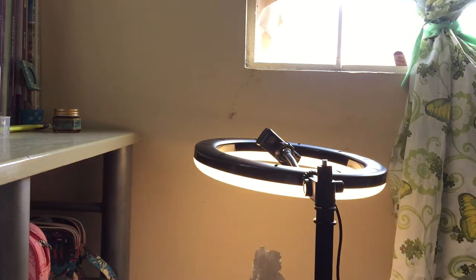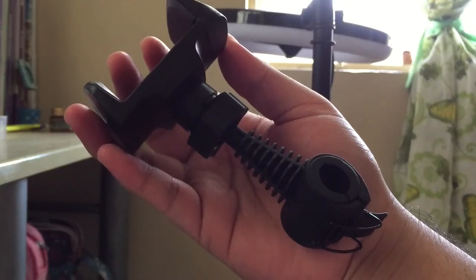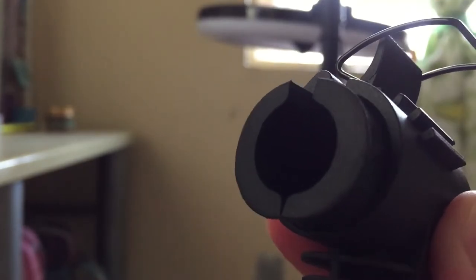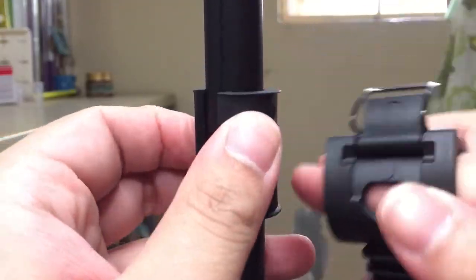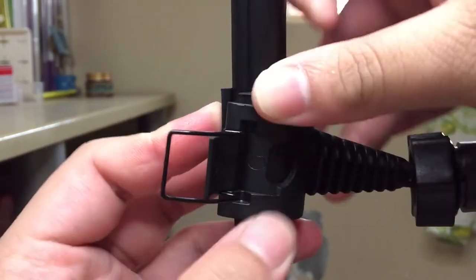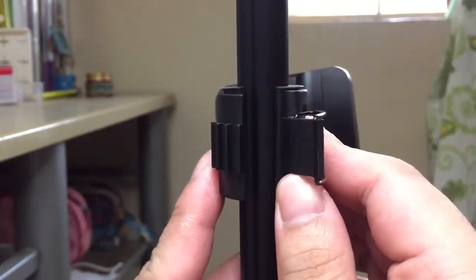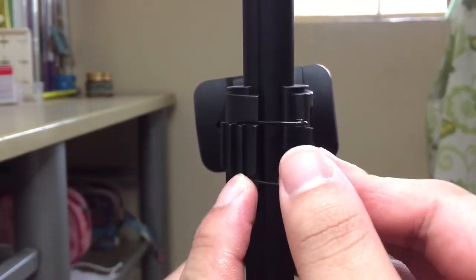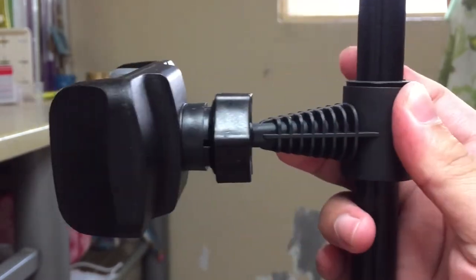Now, you might remember a second phone holder. Here's how to set it up if you need it. First, you want to wrap this cushion around the area where you want the phone holder to be and lock it in place using the plastic clamp. It did take me a couple of tries but it's not something I'd worry about.